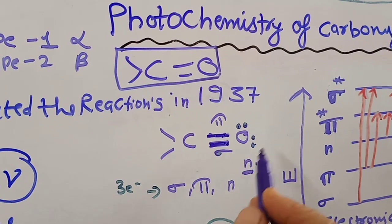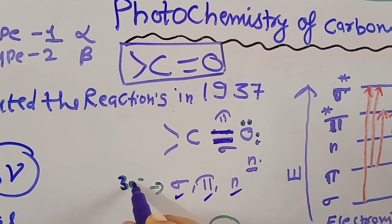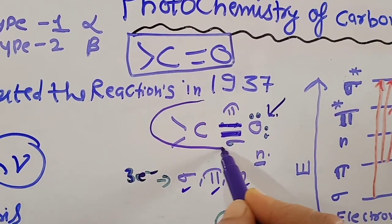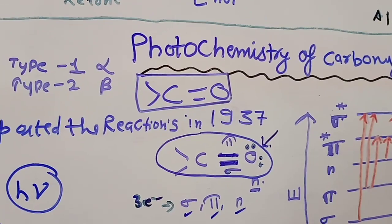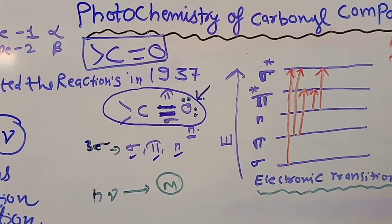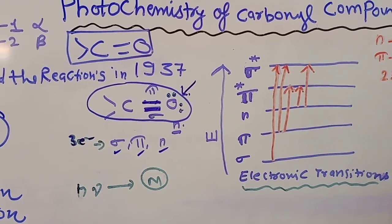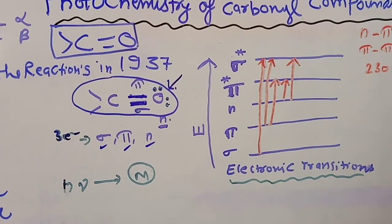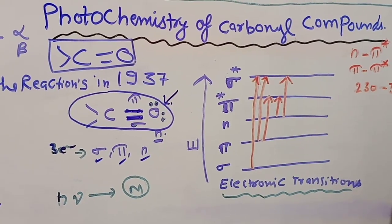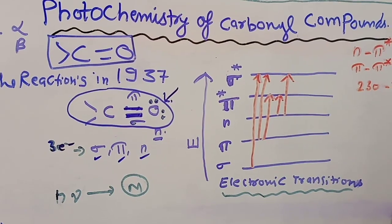In a carbonyl group, sigma, pi, and n types of electrons are present. When light falls on this molecule, excitation or electronic transitions take place — an electron absorbs radiation and jumps from the ground state to the excited state. In the carbonyl group there are sigma, pi, and n type electrons, where n means non-bonding.